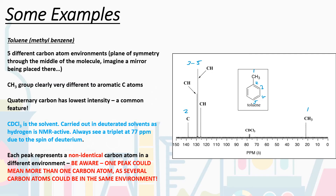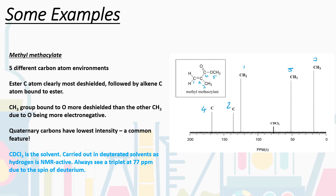The key thing is that each peak on an NMR spectrum represents a non-identical carbon atom — they're in different environments. But one peak could represent more than one carbon atom, because several carbon atoms can be in the same environment through symmetry. For toluene we have five peaks, but actually seven carbon atoms — because the carbons labelled three and four each have a symmetry equivalent carbon on the other side of the benzene ring. Always remember that peaks correspond to non-identical carbon atoms; the number of peaks doesn't always equal the number of carbons.